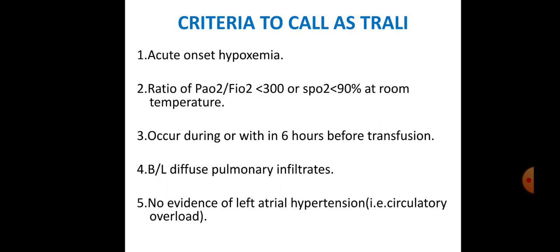The criteria to call it TRALI: acute onset hypoxemia with a ratio of PaO2 to FiO2 less than 300, or oxygen saturation less than 90% on room air. The condition occurs during or within 6 hours of transfusion, with bilateral diffuse pulmonary infiltrates and no evidence of left atrial hypertension — that is, no circulatory overload.